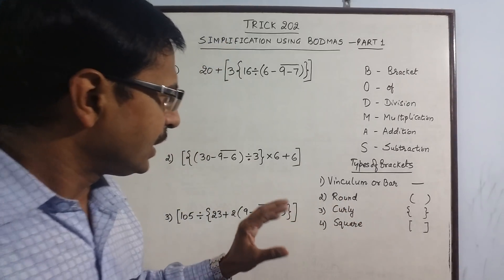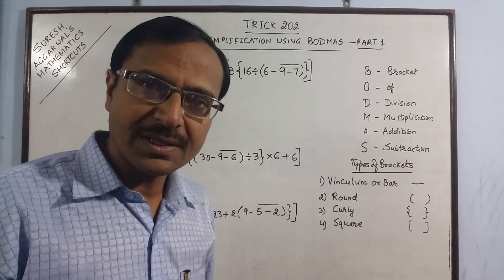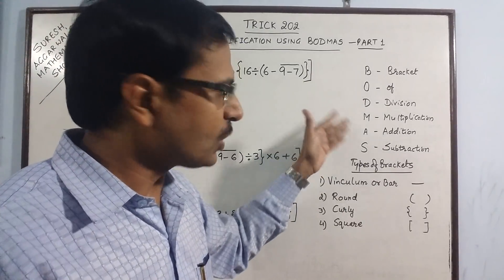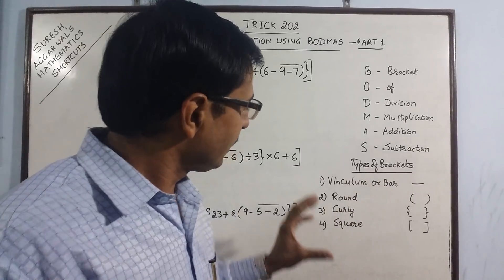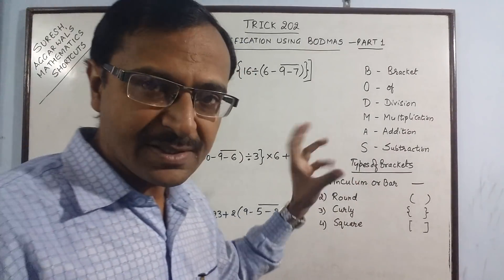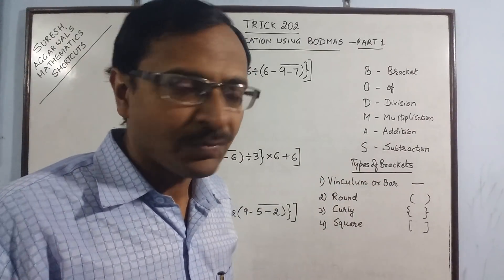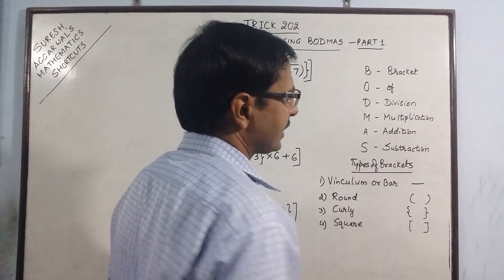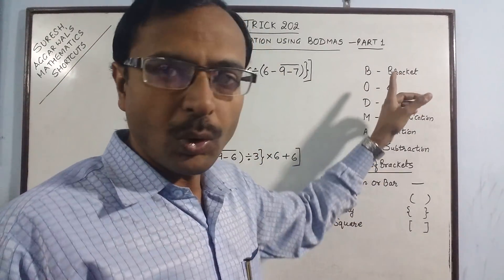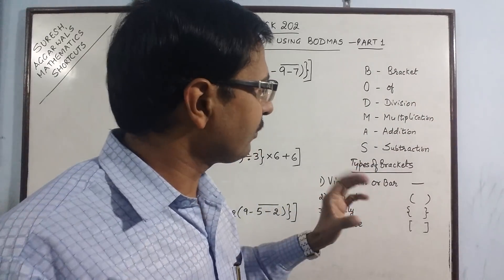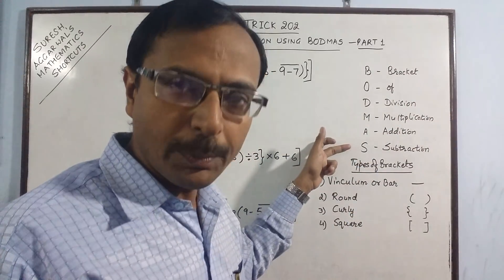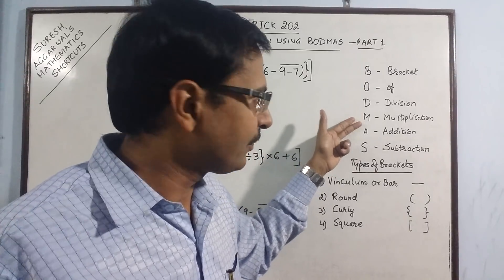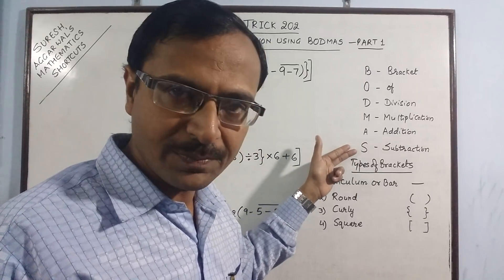To understand this important concept, first we need to know the basic concept of BODMAS — this abbreviation. BO stands for bracket off, and there are four operations: division, multiplication, addition and subtraction.